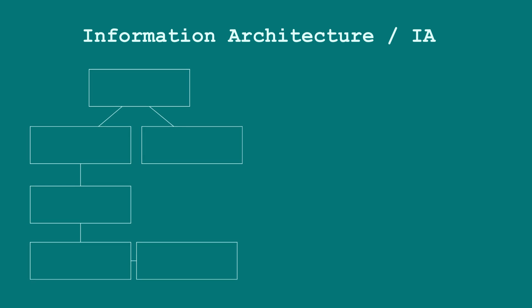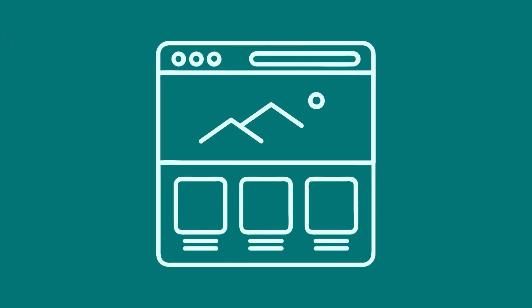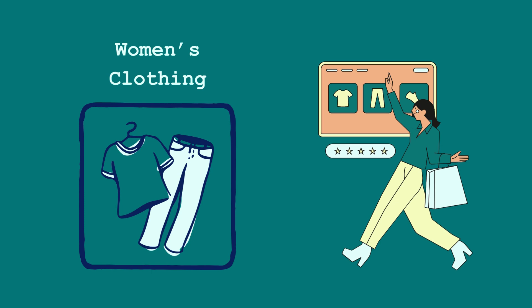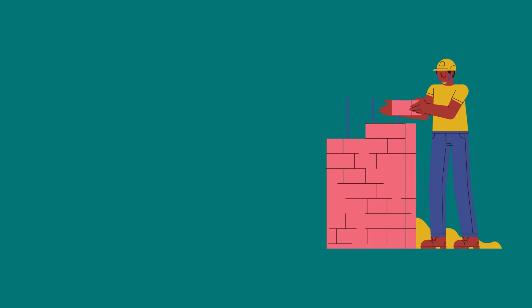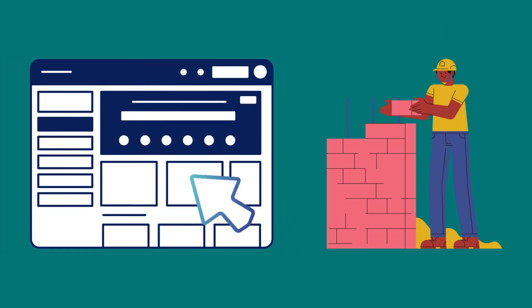Information architecture, or IA for short, is the process of organizing and structuring the content of a website or an app. It helps users find information quickly and easily by making sure the layout is logical and intuitive. It focuses on how information is grouped, labeled, and navigated. Think of it as the blueprint of a website — just like a building needs a solid foundation, a website needs a clear structure so users don't get lost or frustrated.